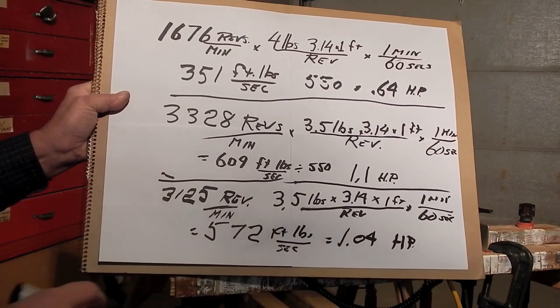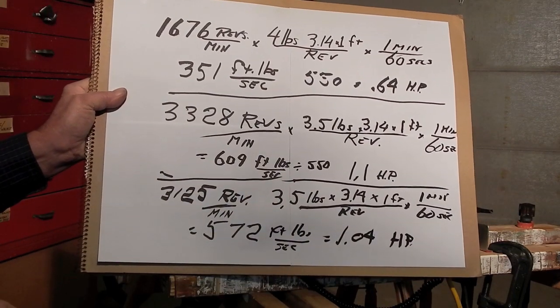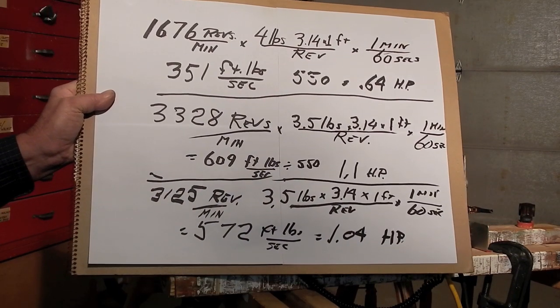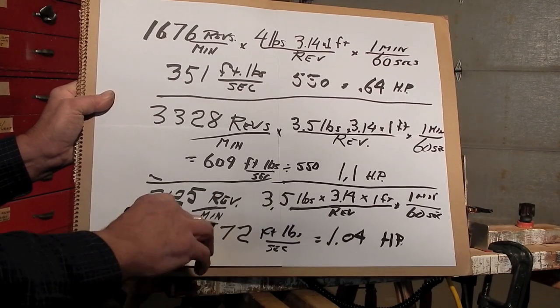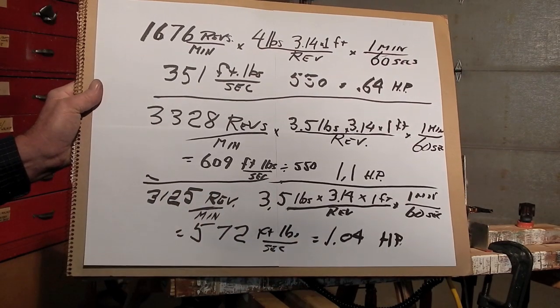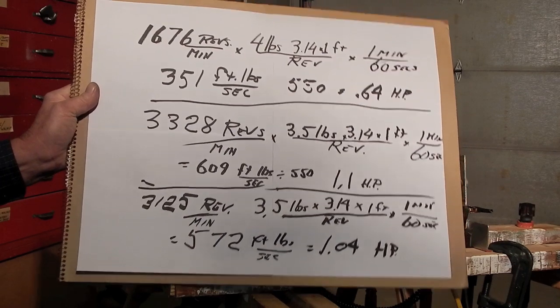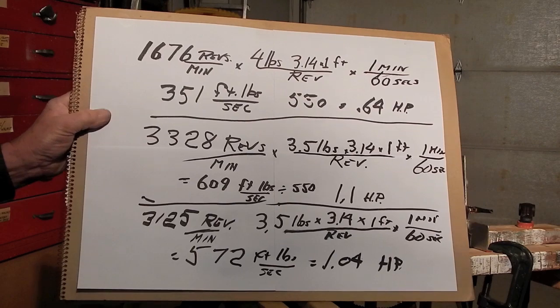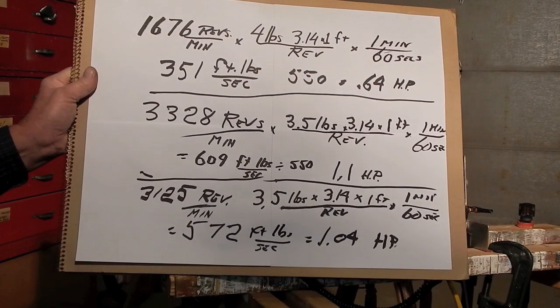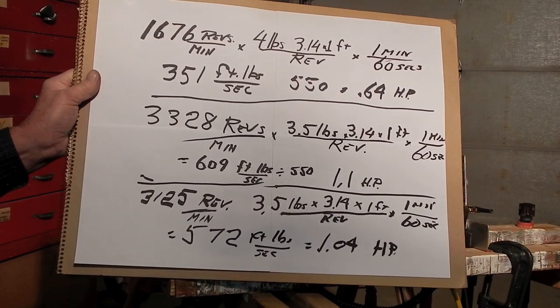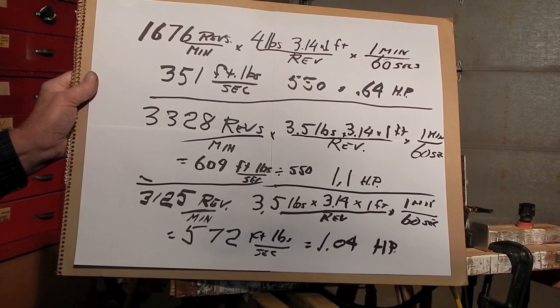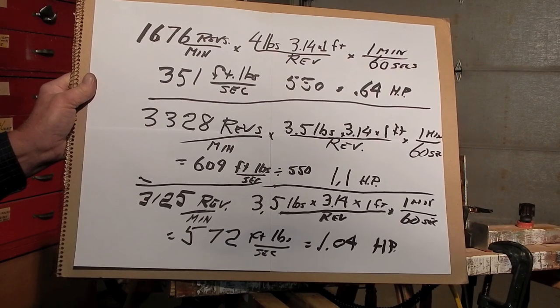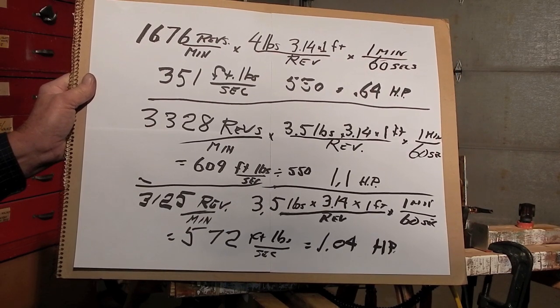So this engine rated at 3.5, or advertised at 3.5 as a net output shaft horsepower, with my rather approximate calculations came to 1.04 horsepower. I guess there is some truth to the fact that electric motors will perform about the same as a gasoline engine two or three times the horsepower.